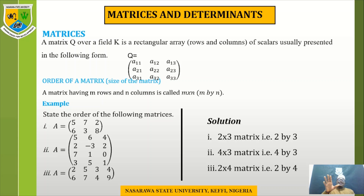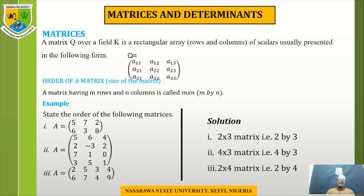Looking at the nature of the matrix and reading the row: the first subscript tells you the row and the second tells you the element position. For example, A11 means first row, first element; A12 means first row, second element; A13 means first row, third element. This arrangement in the bracket forms what we call a rectangular array — a matrix is a set of real or complex numbers arranged in rows and columns.